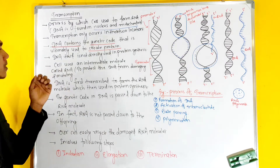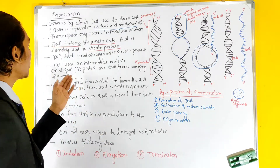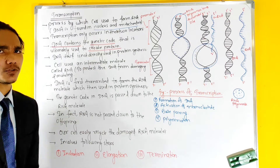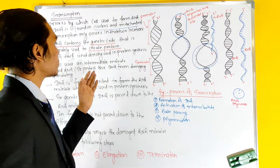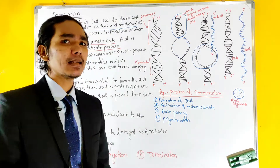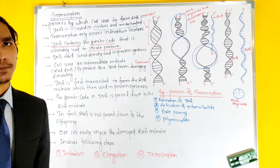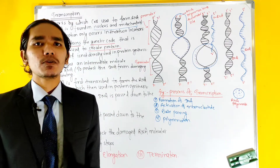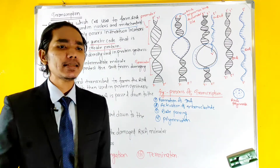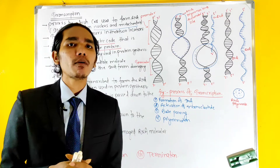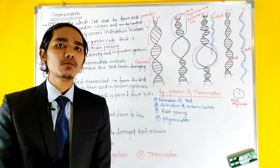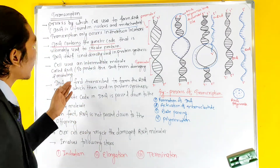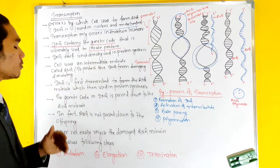The cell uses an intermediate molecule called RNA. Why does the cell use RNA? That is because we need to protect the DNA. This means if DNA changes, we can have different diseases — DNA is protected from damaging and mutating.